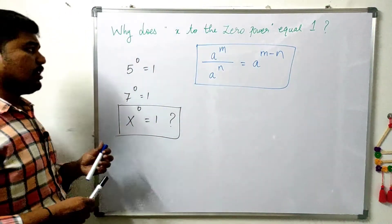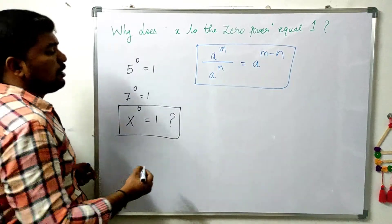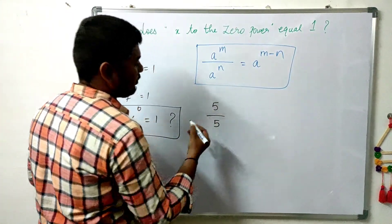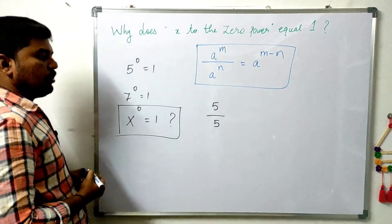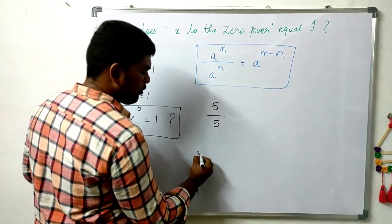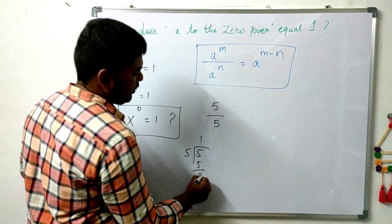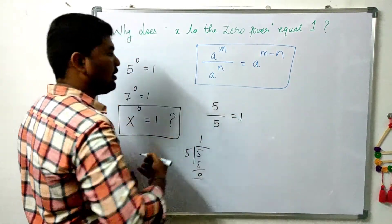You will learn this in 7th and 6th standard. Now, what are we going to do? Let's divide the number 5 divided by 5. We will answer 5 divided by 5. 1 times 5 is 5, so 5 divided by 5 is 1.